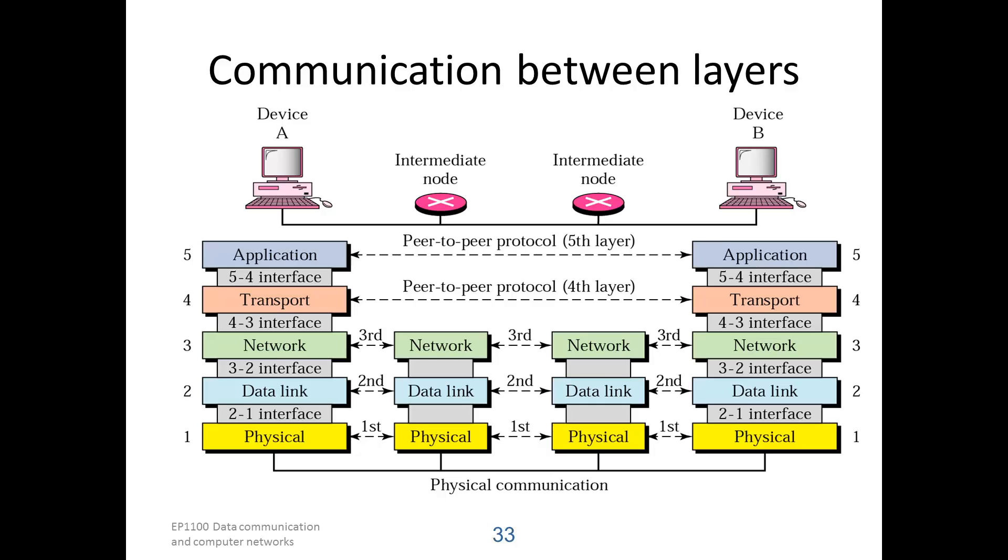The application layer on the sender side accesses the service of the transport protocol through a well-defined interface, marked here as 5-4 interface, and similar interfaces are between all other layers. The physical layer is the one that carries the bits across the network.